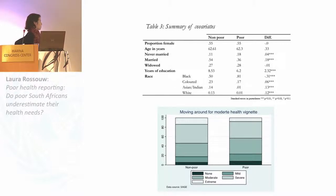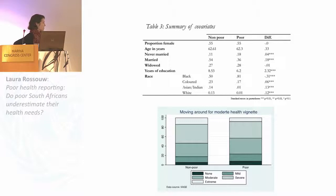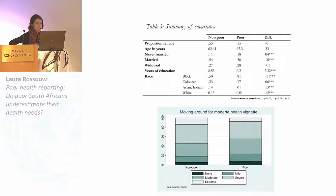An illustration of a vignette rating in the health domain of mobility shows a vignette with an average health state. The column on the left is for the non-poor and on the right for the poor. The non-poor are more likely to say the vignette has an extremely poor health state, and less likely to say it has no or mild health difficulty. This suggests the non-poor are more pessimistic in their analysis of the vignette's health.